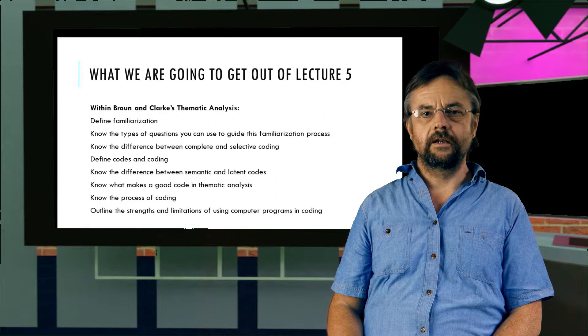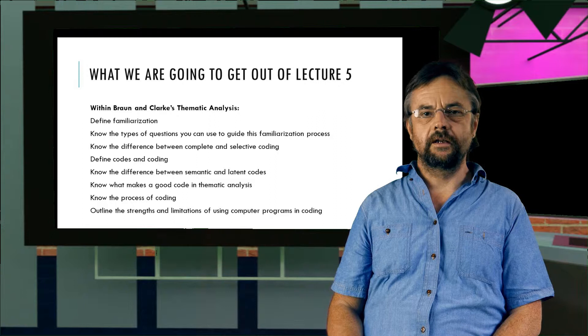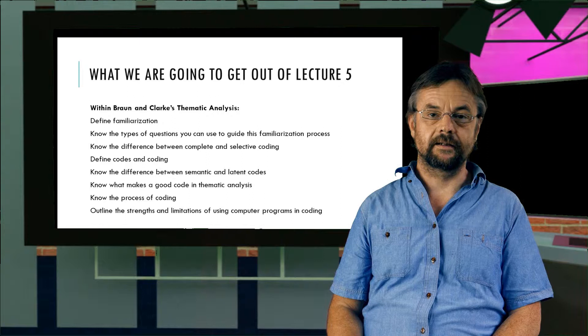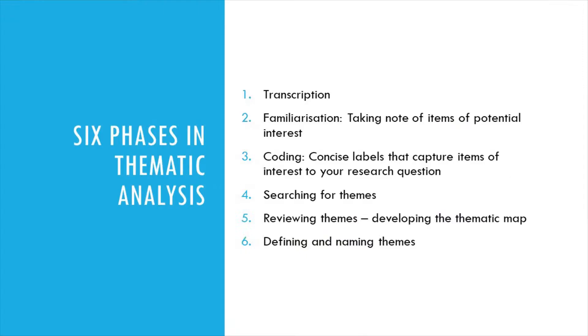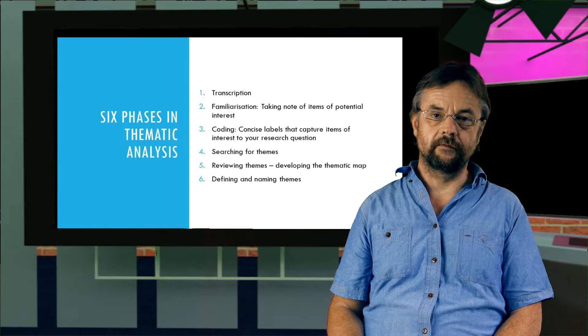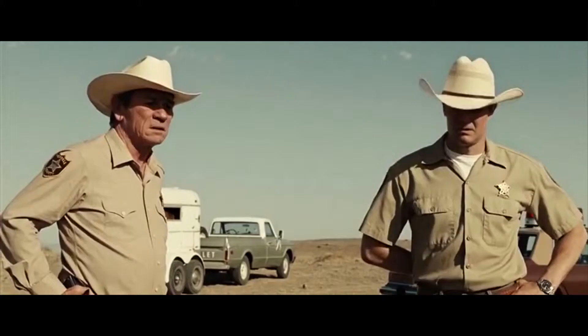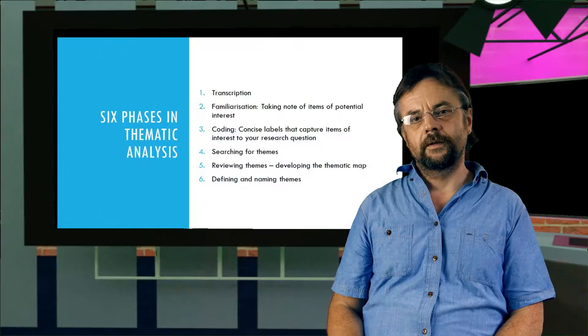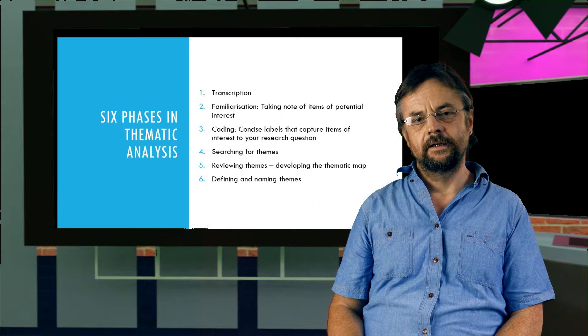Here's a list of all the things we're going to achieve and you can see that it's all about how to use coding in thematic analysis. Now, there are six phases in thematic analysis and we're going to focus on phases two and three. Note that we're talking about phases, not steps. That should give you an idea that we're not talking about a linear process. Rather, we can move from phase one to phase two and then return to phase one. It's an iterative rather than a linear process.